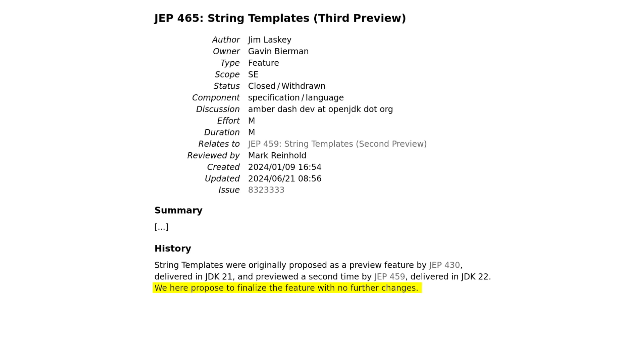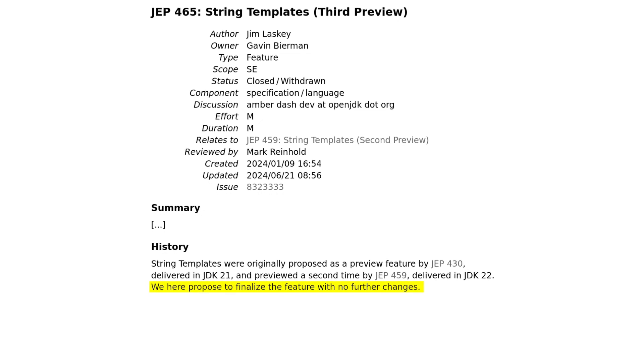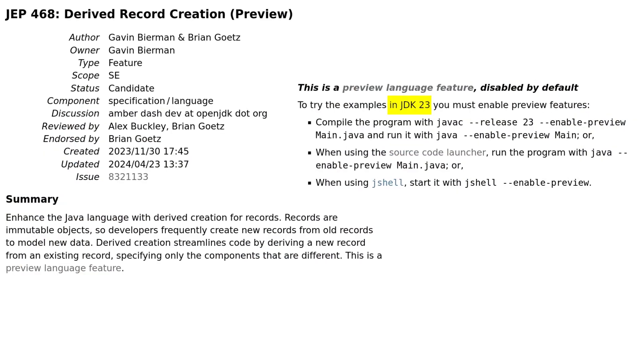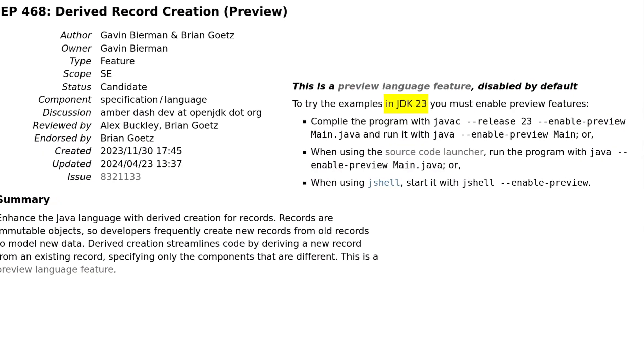The importance of these states is hard to overstate. This was one source of the string template confusion. Yes, the text of JEP 465 said — in fact still says — we propose to finalize the feature. Similarly, the text of JEP 468 says that derived record creation will be a preview feature in JDK 23. But that's just what's being proposed. Were those JEPs targeted to JDK 23? No? Then the text doesn't matter. Period.